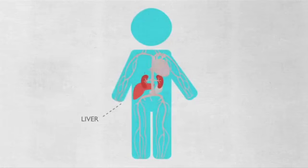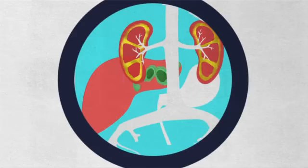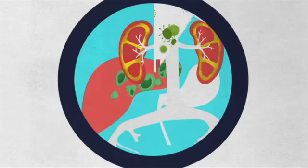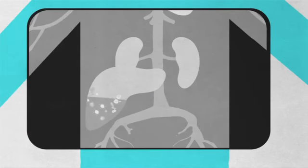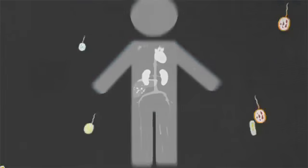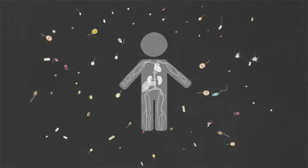Vital organs like the liver and kidneys filter out toxins and waste, while the immune system fends off diseases. But when a child is malnourished, dangerous toxins build up in the liver. The kidneys fail, and a weakened immune system crumbles in the face of killer diseases.